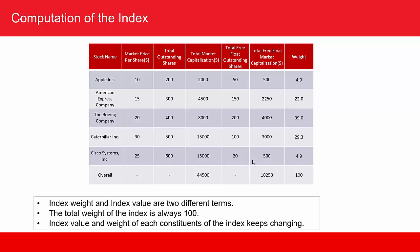Tomorrow when the stocks trade and prices change — some appreciate, some depreciate — if the overall free float market capitalization increases by 5% from $10,250 to $10,750, then my index value will increase from 100 to 105. The index value can change every day because it depends on the free float market capitalization of all the companies in the index. But the total weight of the index will always remain 100, while the weight of each individual stock to the index can vary daily.